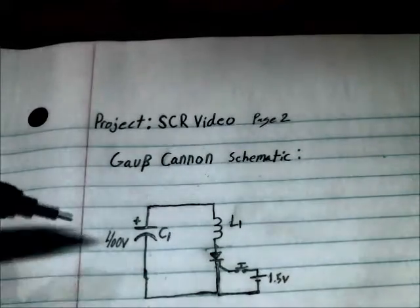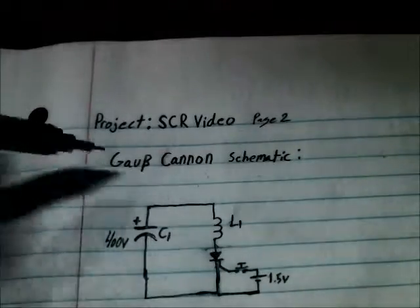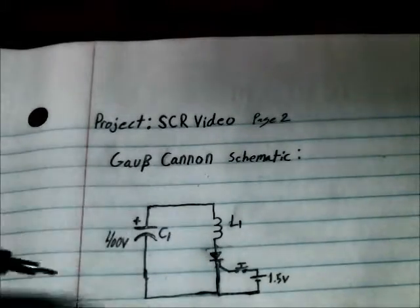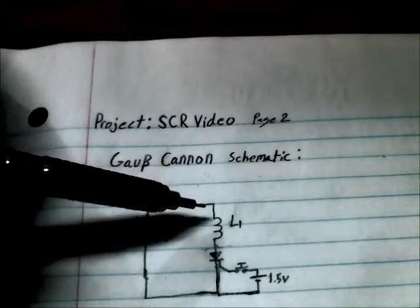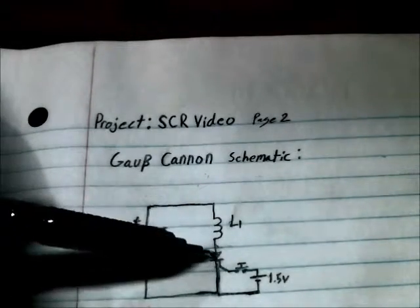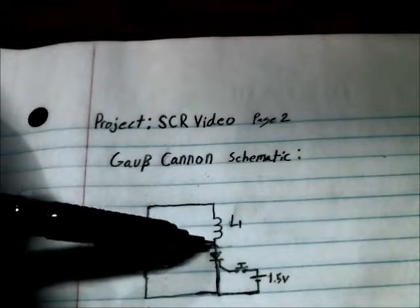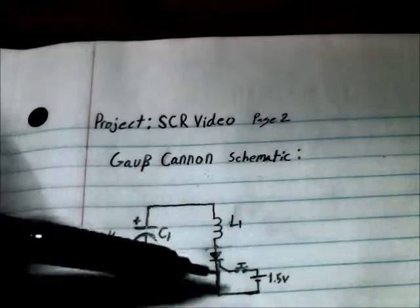Here's a schematic of a gauss cannon utilizing the SCR. Here's your capacitor pack, and here's your coil that would shoot the projectile, and here's the SCR which controls the current through the circuit.